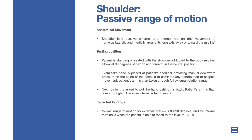Anatomical movement: shoulder joint passive external and internal rotation. Patient is standing or seated with the shoulder adducted to the body midline, elbow at 90 degrees of flexion, and forearm in the neutral position.